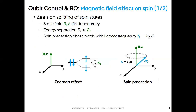In electron hole spin qubits, the two basic states of the qubit are the spin-up and spin-down states of an electron or a hole in a quantum dot. In the absence of a magnetic field, the two spin states are degenerate, meaning they share the same energy. So we need to apply a static magnetic field B0 in order to lift the degeneracy and create an energy separation EZ between the two states, which is directly proportional to the intensity B0 of the field. Also, the static magnetic field causes the expectation value of the spin angular momentum to precess about the z-axis with the Larmor frequency fL, which is equal to the energy separation EZ divided by the Planck constant.